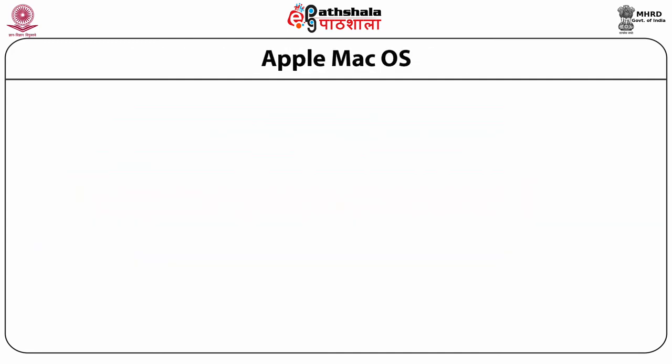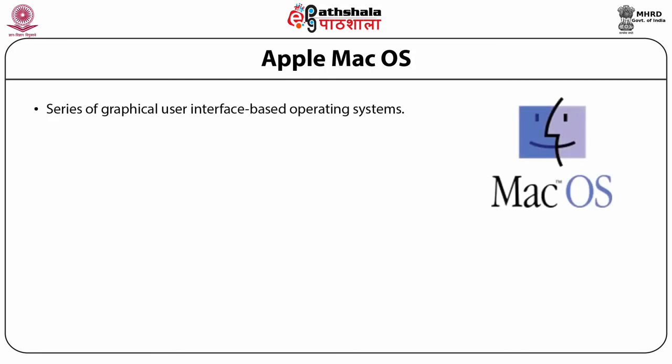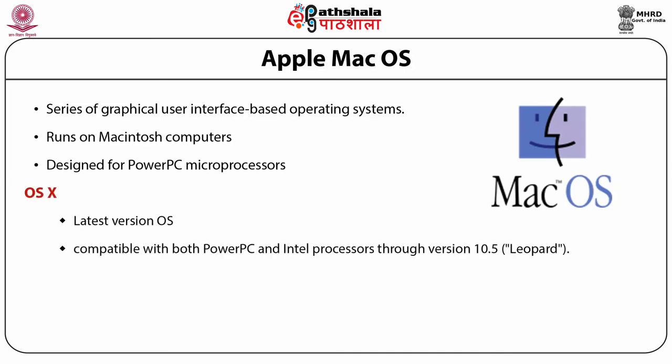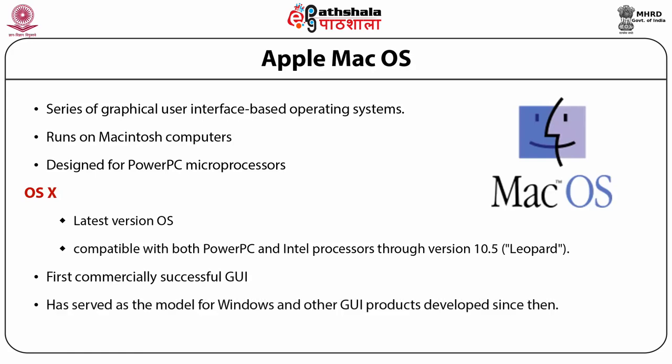Now let us see some other operating systems. Apple Mac OS is a series of graphical user interface based operating systems which run on Macintosh computers, designed for a powerful PC microprocessor. The latest version is compatible with both PowerPC and Intel processors through version 10.5 called Leopard. Mac OS was the first commercially successful GUI and has served as a model for Windows and other GUI products.